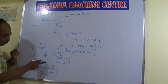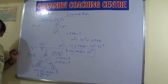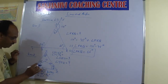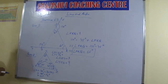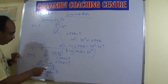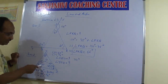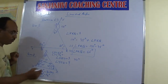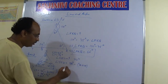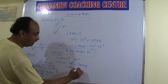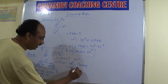Since YO bisects angle Y, the half angle at Y in triangle OYZ is 54 divided by 2, which is 27 degrees. Now in triangle OYZ, 27 plus 32 plus angle YOZ equals 180 degrees. So angle YOZ equals 180 minus 59, which gives 121 degrees.